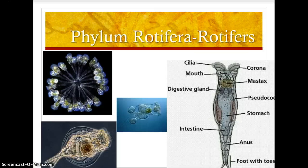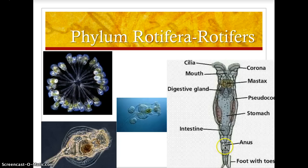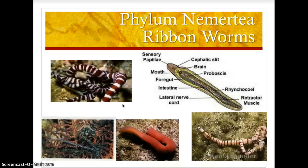The next group — domain Eukarya, kingdom Animalia — is phylum Rotifera, the rotifers. You can see the basic anatomy of a rotifer: cilia at the top around a crown called the corona help pull food into the mouth. The mastax helps grind up food further, followed by the digestive gland, stomach, intestine, and anus. They have a foot with toes. There are both marine and freshwater species of rotifers.